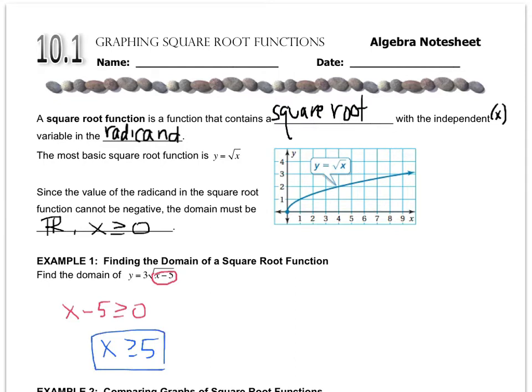So the values for x are that x has to be greater than or equal to 5. So if you were to go to graph this, the graph wouldn't exist at values of x lower than 5.